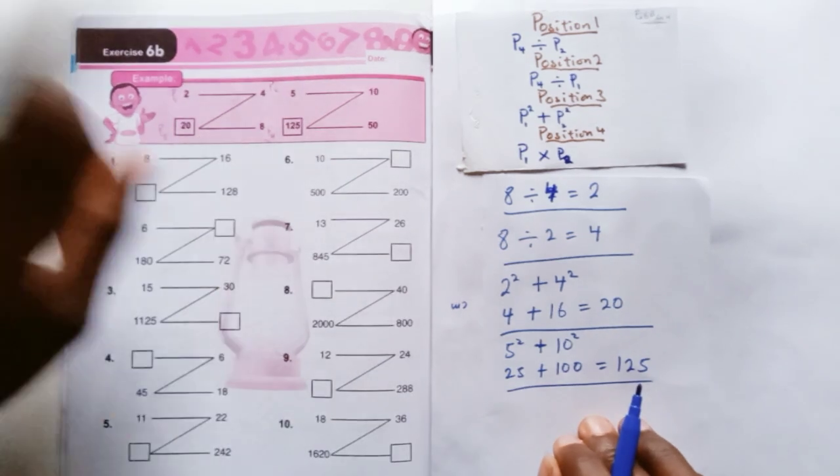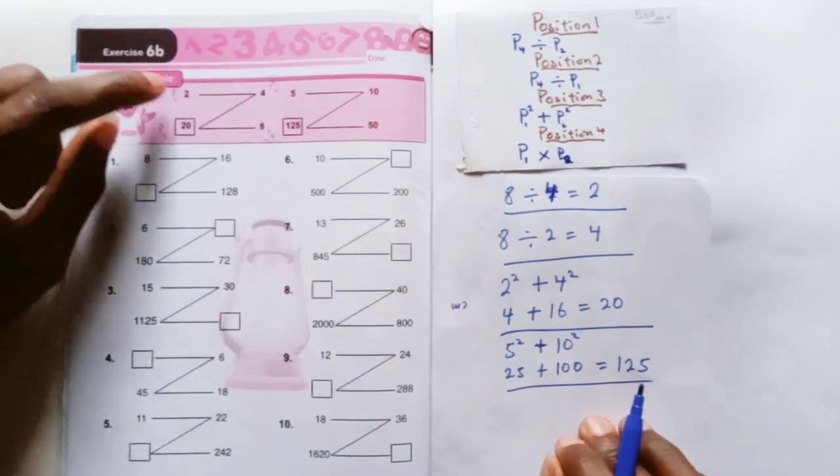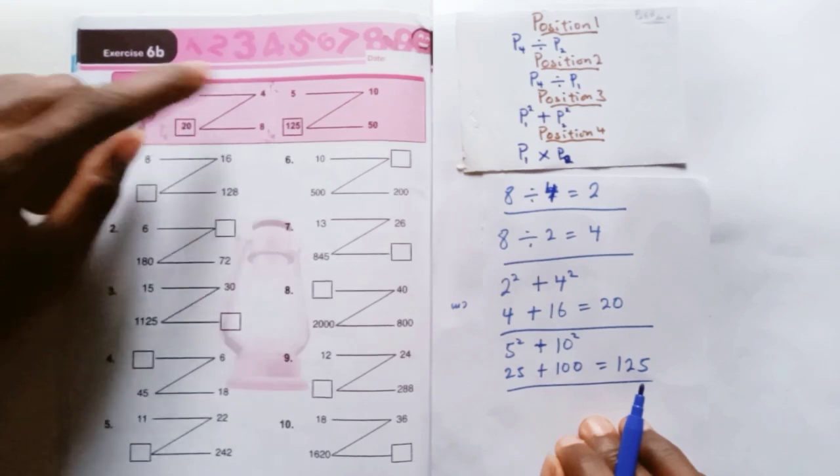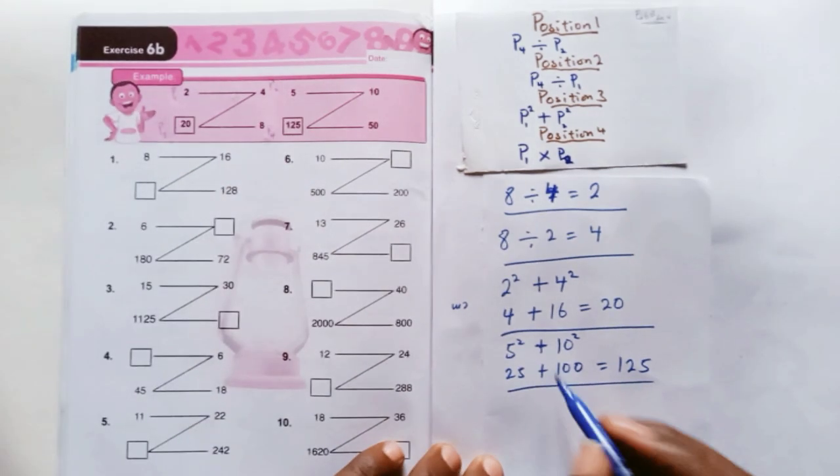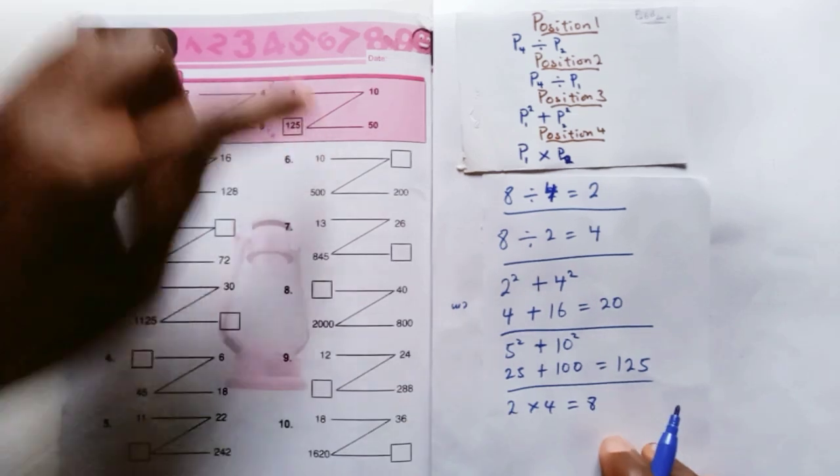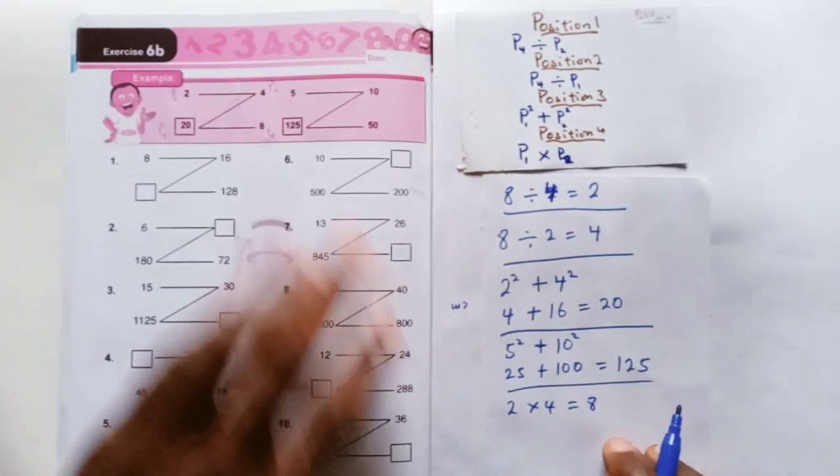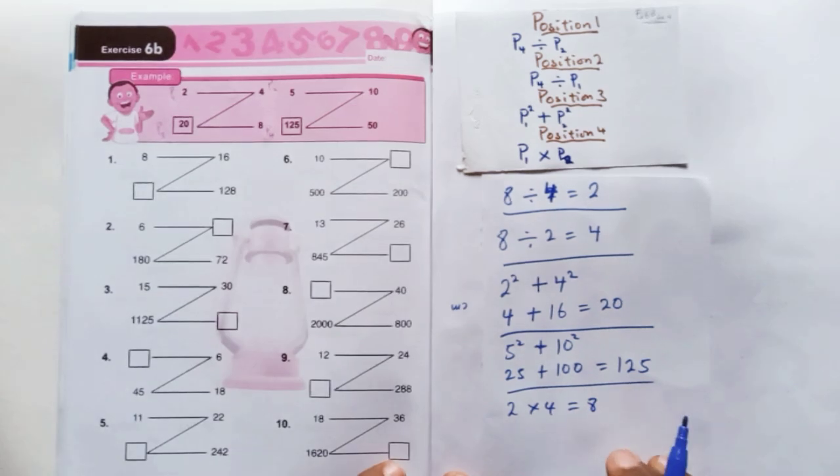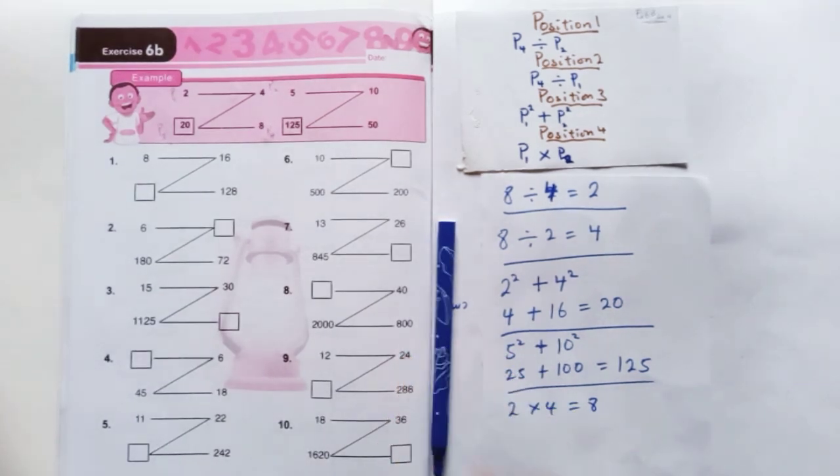The last position there, which is 8. How do we get that? We're going to say P1 times P2. So that would be 2 times 4, which is 8. Same thing here, 5 times 10, which is 50. So that is the pattern, guys. Just follow that pattern and you'll be able to answer any question there.